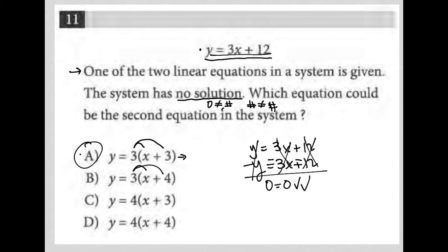And that actually is a true statement. It's not like what we had before, 0 equaling 3, which was not a true statement. 0 does, in fact, equal 0. And this is an example of the solution being infinitely many solutions.